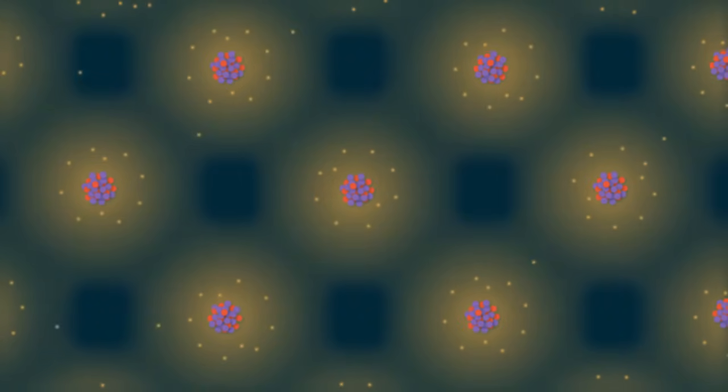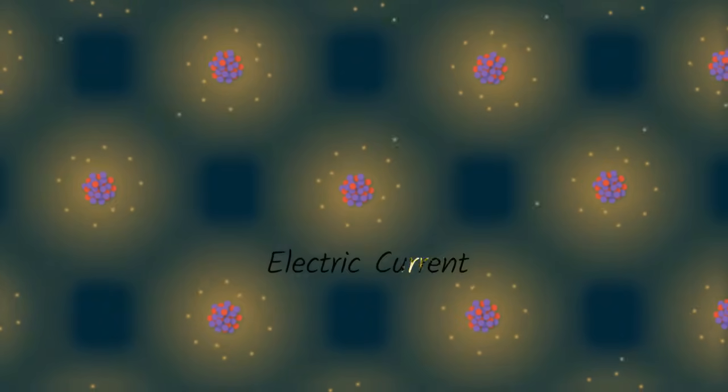Electricity is the movement, or flow, of electrons from one atom to another. This flow of electrons is called current, electric current.